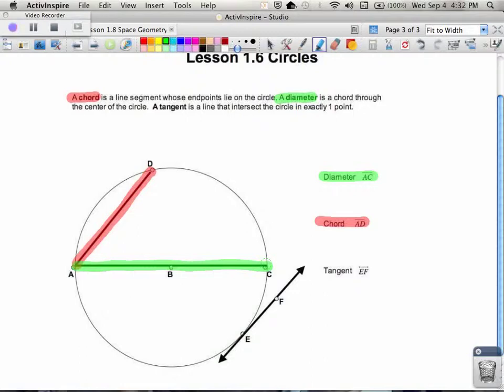And a tangent is usually a line, but it could be a segment, could be a ray, that intersects the circle in exactly one point. So the tangent, we see off to the side here, is intersecting the circle in exactly one spot. It's intersecting right at the E. And remember that lines must be named with exactly two points.